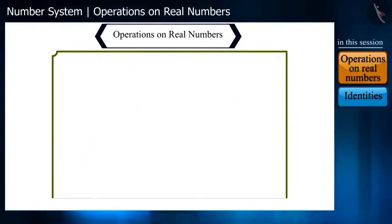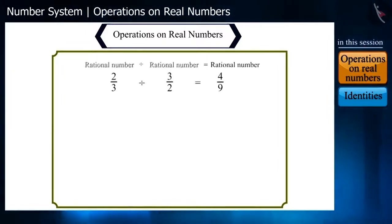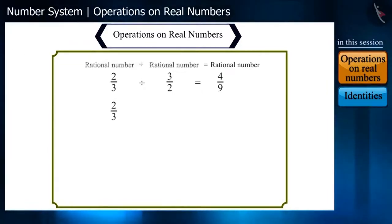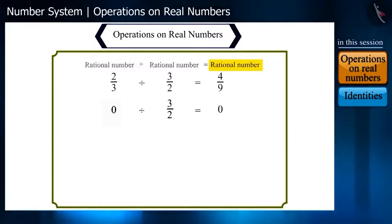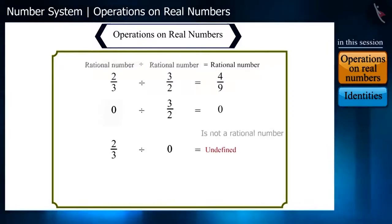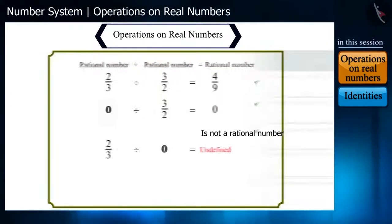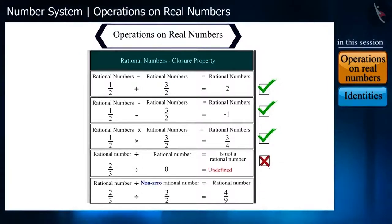Can we say the same for division also? Let us see. Here are two rational numbers. When we divide them, we will still get a rational number. Please notice here — if we keep 0 in place of 2/3 and divide it by 3/2, we will get 0, which is a rational number. But if we replace 3/2 by 0 and divide 2/3 by 0, we will get a number which is undefined — not a rational number. Therefore, rational numbers are not closed under division, but if we consider a set of non-zero rational numbers, then that set will be closed under division.